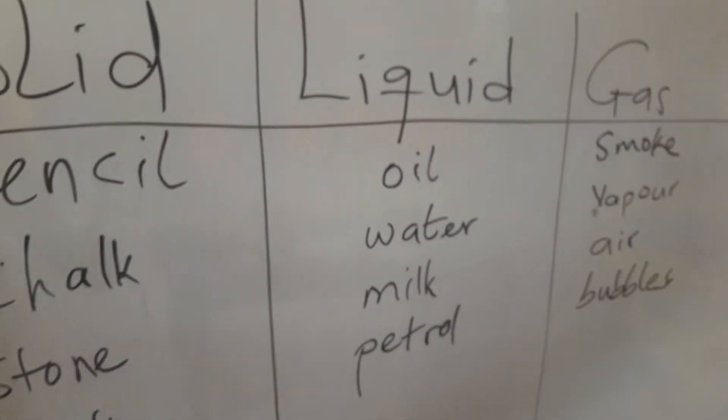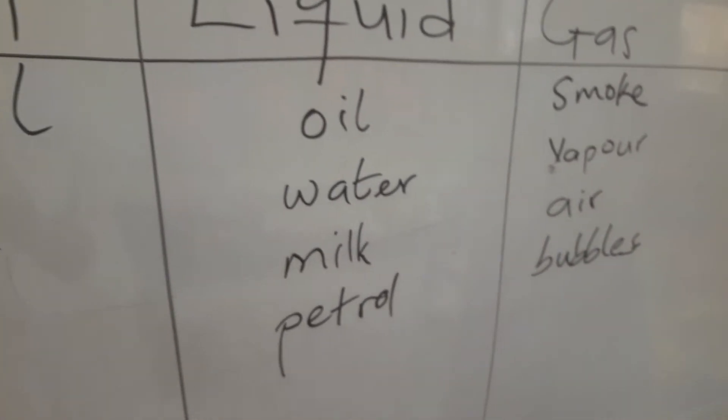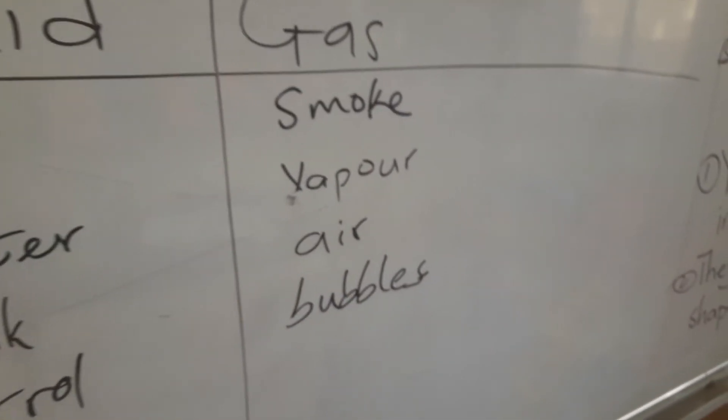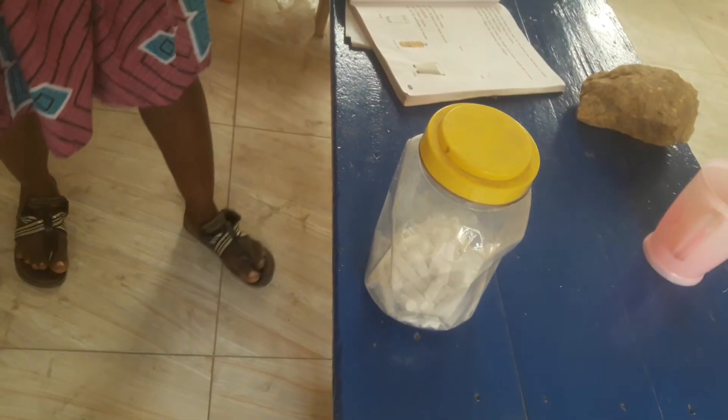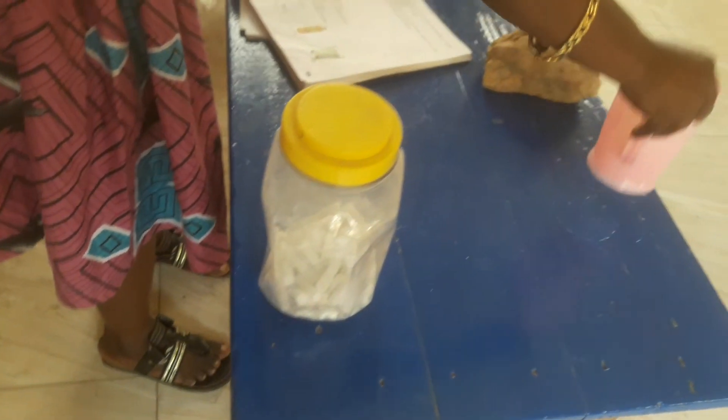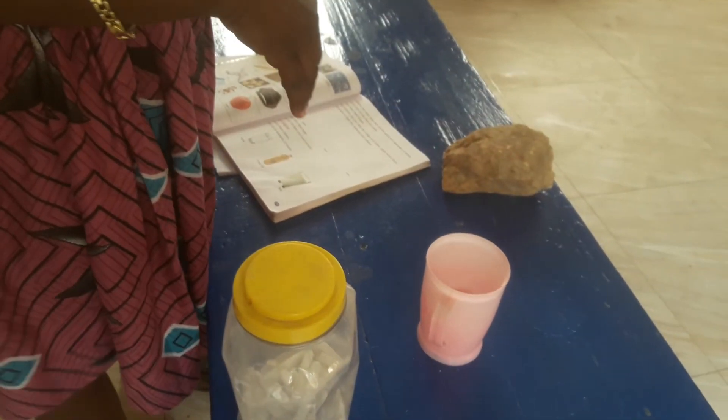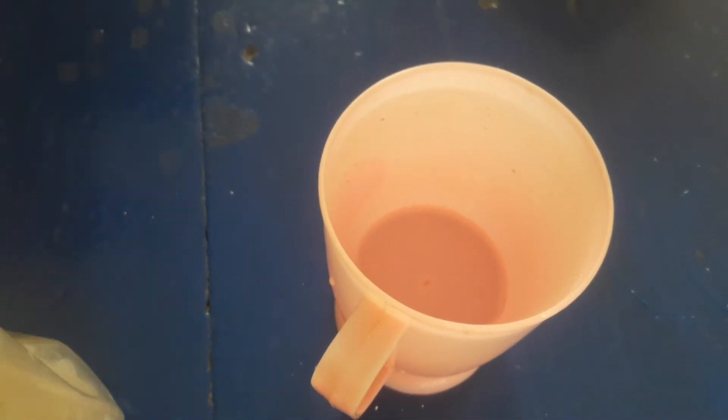So I said that matter is anything that has mass and can occupy space. If I put this truck and this container on my table, it is matter because it is occupying a space. A cup of water is also occupying a space on my table. All the things on my table are occupying space, so they are all matter.